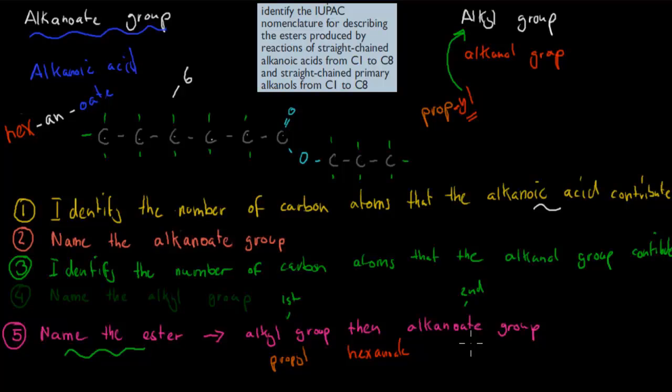I'll quickly cover again what we need to do. First of all, we need to figure out which part is contributed by our alkanoic acid, which part is contributed by our alkanol. Because remember, an ester is just them two joined together. Once we've identified that, we identify how many carbons each have contributed. In this case, it was six for the alkanoic acid and three for the alkanol group. Then we name them. So we just change around the suffix bit. And that gives us our alkanoate group from our alkanoic acid and our alkyl group from our alkanol. Once we've done that, once we have the actual names, we put our alkyl group first. And then we put our alkanoic acid group second. And then we have the actual name for the ester itself.